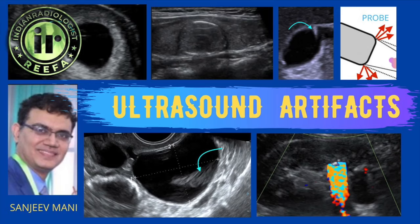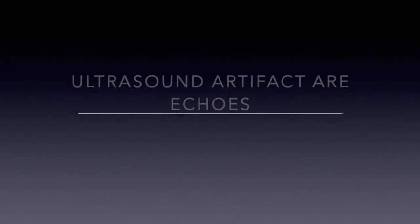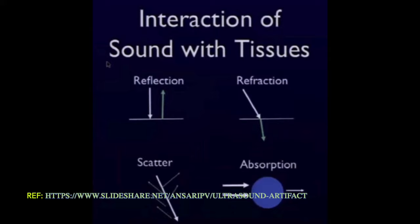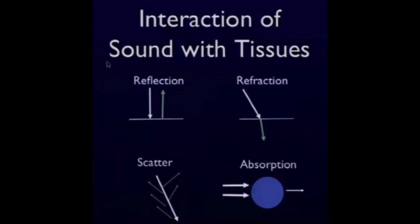So what is an ultrasound artifact? Ultrasound artifacts are echoes on the received ultrasound image that are not directly similar to the actual tissue being scanned. When the ultrasound beam from the probe hits the tissue it is ideally supposed to reflect back, but all tissues give back different signals. Tissues may refract, scatter, or absorb sound, and it is these characteristics that give rise to ultrasound artifacts. However, artifacts are not bad — many times we can actually diagnose certain conditions using them.